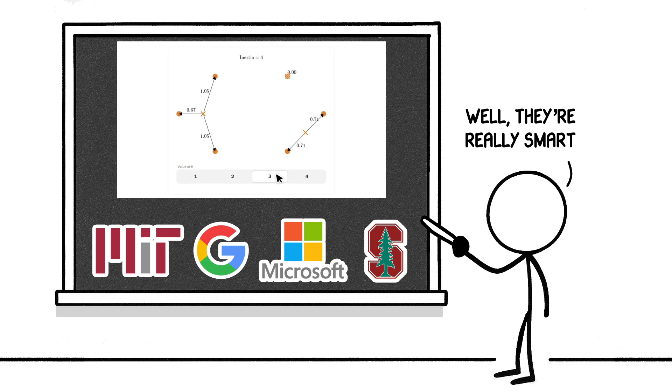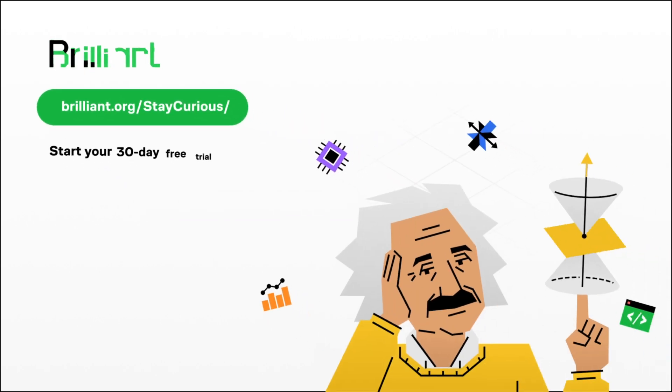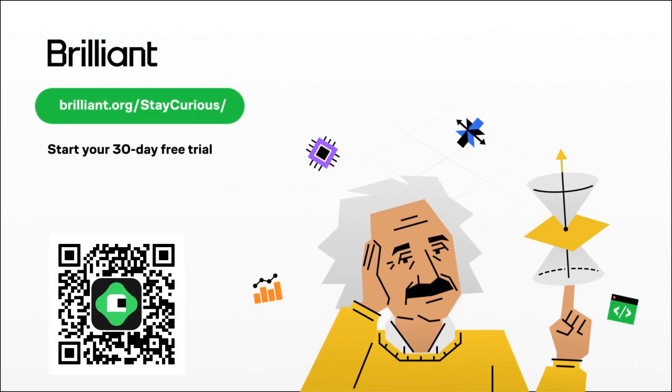If you want to sharpen your thinking and make the universe a little less confusing, head to brilliant.org/staycurious. You'll get a 30-day free trial plus 20% off your annual premium subscription. Just hit the link in the description or scan the QR code on the screen to start exploring science the hands-on way.